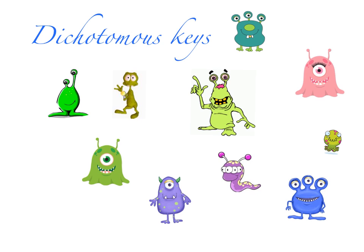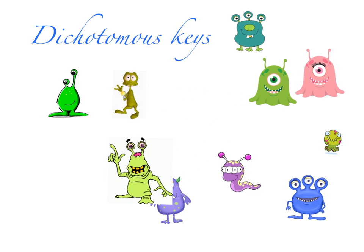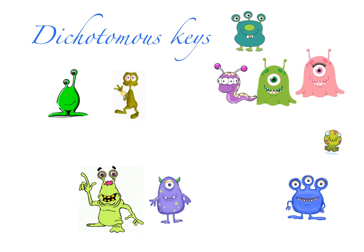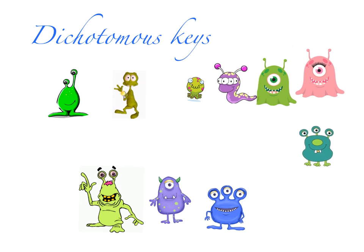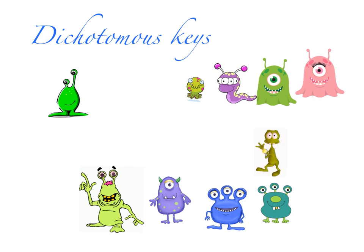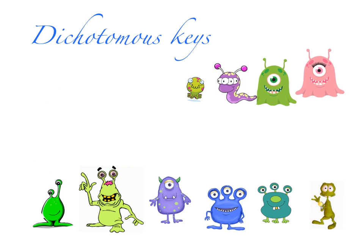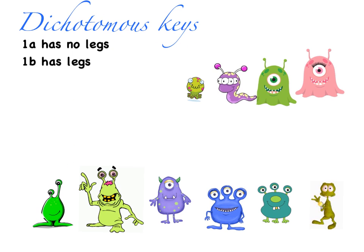I could divide them into two groups on the basis of color, or I could do it on number of eyes. I'm going to do it based on whether they have legs or not — dividing the ones that don't have legs from the ones that do have legs. These will be my first two choices on my dichotomous key.